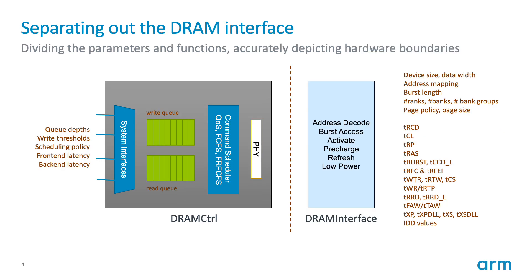If we want to separate out the DRAM interface, this is conceptually what it would look like. We have the DRAM controller still containing the parameters used to define the controller functionality, but we also create a new object within Python that defines the DRAM interface. We move all of the DRAM-specific parameters to this interface, so it contains everything that relates to the DRAM architecture as well as all the timing parameters, including IDD values that define the currents used for power analysis.